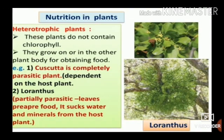Partially parasitic plants have leaves that can prepare food, but they suck water and minerals from the host plant. Plants that grow on the body of other plants to obtain food are called parasitic plants — for example, Loranthus and Cuscuta. Due to the absence of chlorophyll, Cuscuta is completely dependent on the host plant; hence it is called a completely parasitic plant.